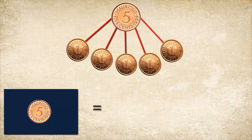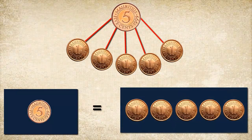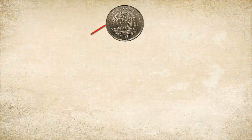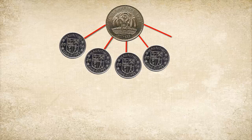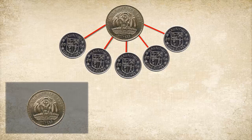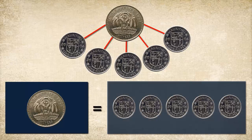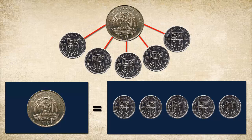One five-cent coin is equal to five one-cent coins. One five-rupee coin is equal to five one-rupee coins.